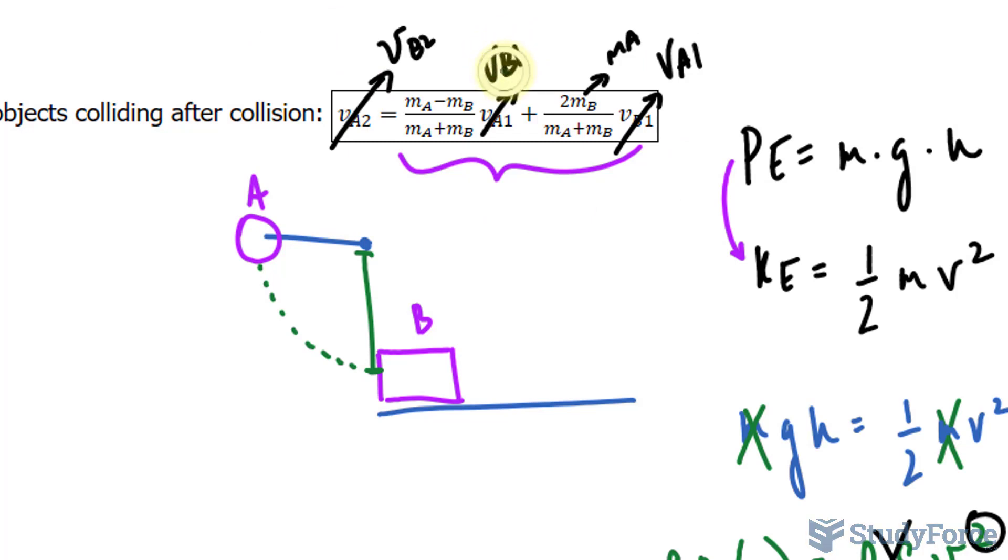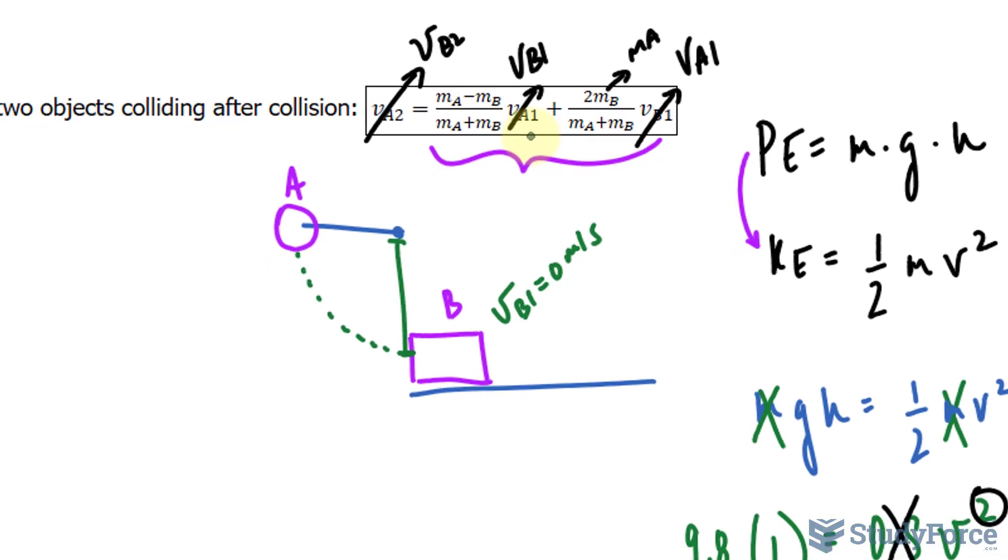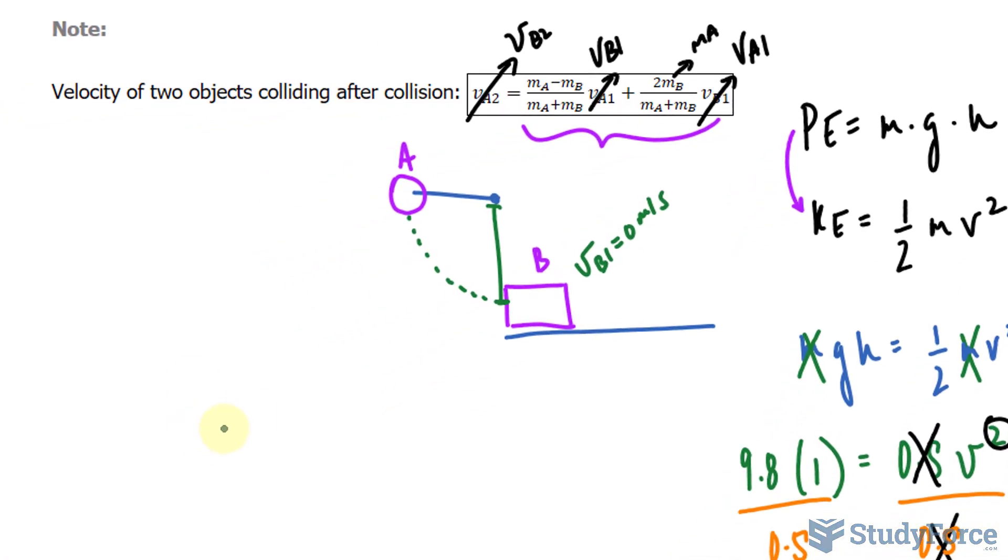So before I rewrite everything that I wrote here, notice that we have VB1 as a factor in this first term. The velocity of this block before the collision was 0. So VB1 is equal to 0 meters per second. This means that all of this term will go to 0, because anything times 0 makes 0. Therefore, the formula we'll be using moving forward is VB2 is equal to this part of the equation.